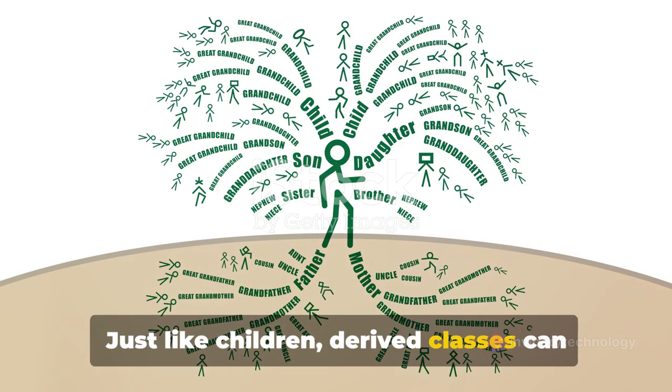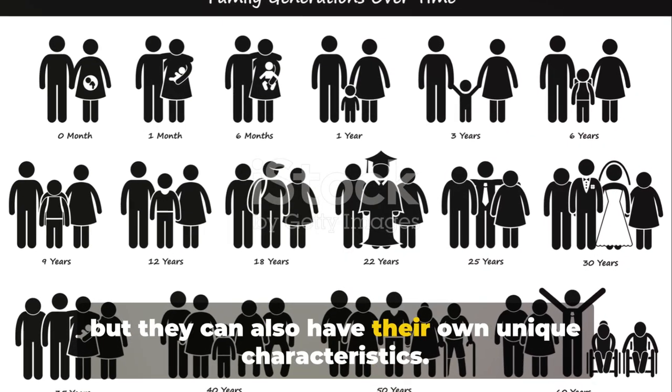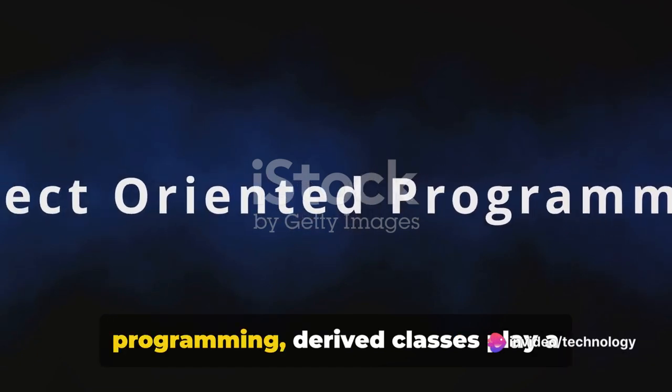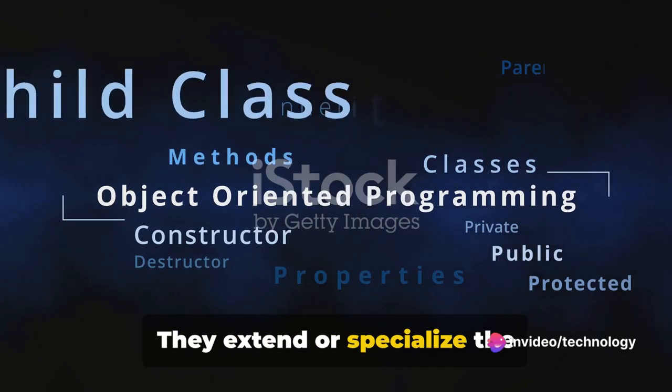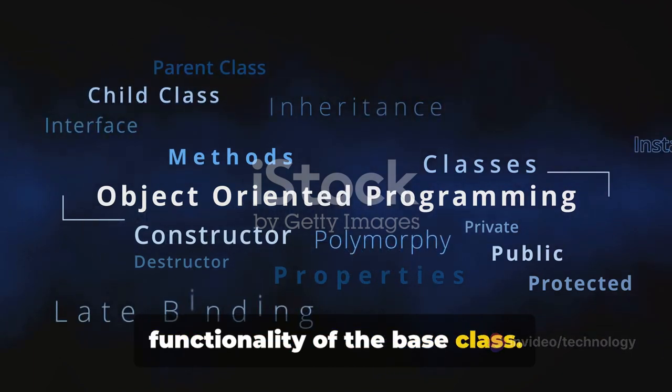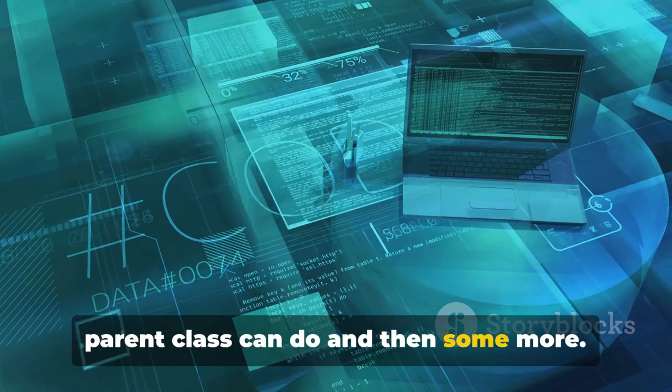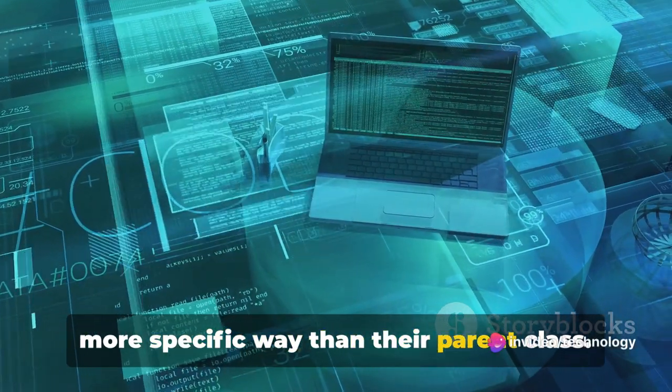Just like children, derived classes can have the same features as their parents, but they can also have their own unique characteristics. In the world of object-oriented programming, derived classes play a pivotal role. They extend or specialize the functionality of the base class. This means they can do everything their parent class can do and then some more.